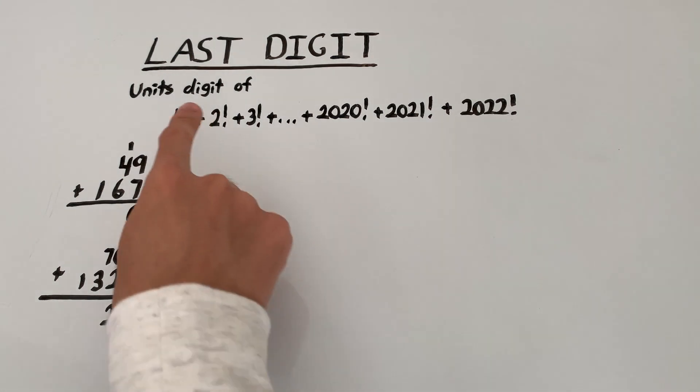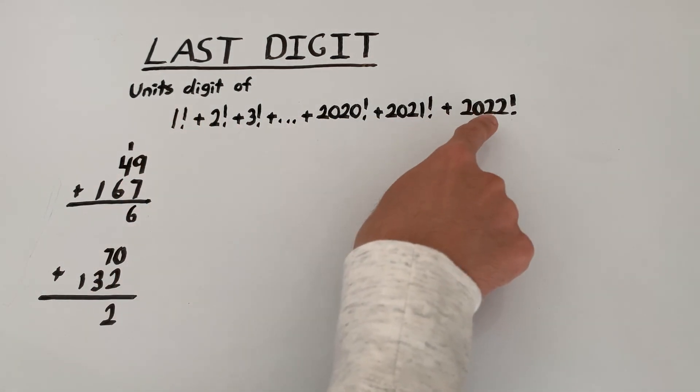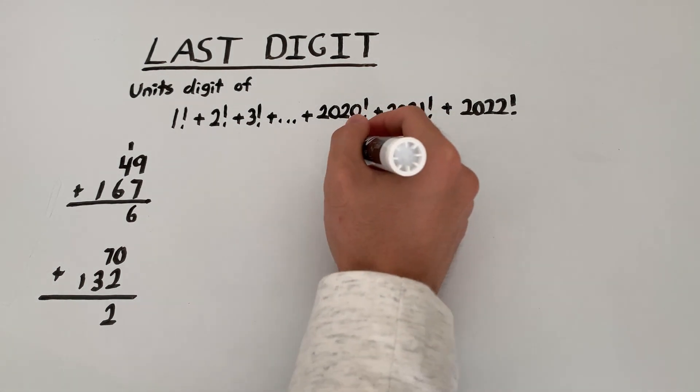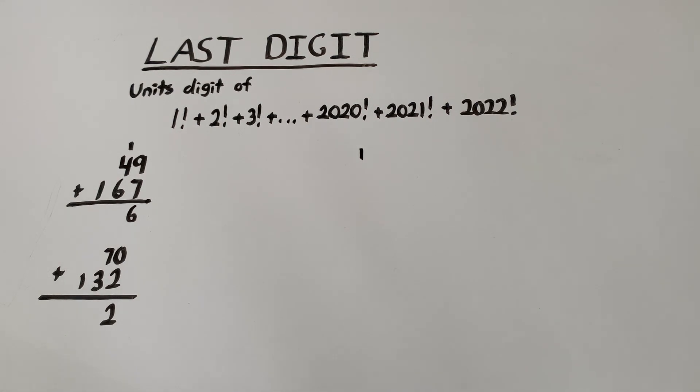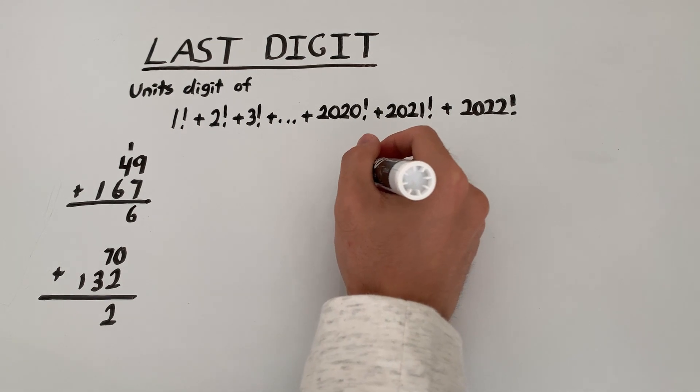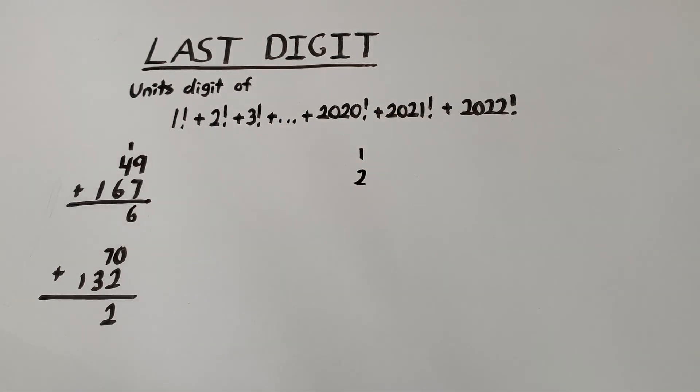So all we have to do in our sum right over here is focus on the last digit. Let's start with 1 factorial. 1 factorial is just 1. 2 factorial is 2 times 1, which is 2. 3 factorial is 6.